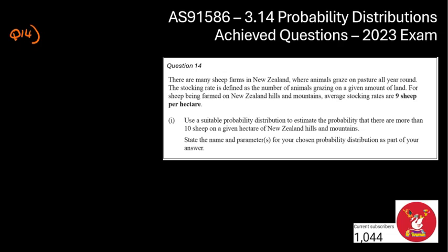So we've got question number 14. There are many sheep farms in New Zealand where the animals are grazing all year round. The rating stock is defined as the number of animals per graze. For sheep being farmed in New Zealand hills, the average stock rate is 9 sheep per hectare. So per hectare is really nice. That's the giveaway of a Poisson distribution. Using a suitable probability distribution, estimate the probability that there are more than 10 in a given hectare. Specifically, it says to name, state and name the parameters for your probability distribution. So the distribution we're using here, as we said, is Poisson distribution. Because it's asked for extra stuff, let's just state what we're doing as we're doing it.